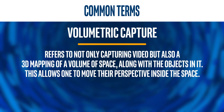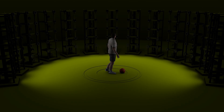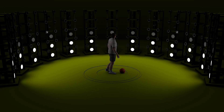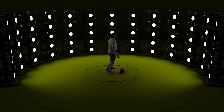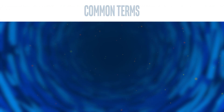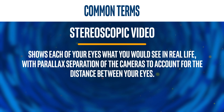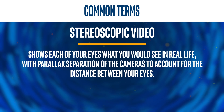Volumetric capture refers to not only capturing video, but also a 3D mapping of a volume of space along with the objects in it, allowing one to move their perspective inside the space. Stereoscopic video shows each of your eyes what you would see in real life, with parallax separation of cameras to account for the distance between your eyes.